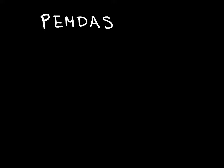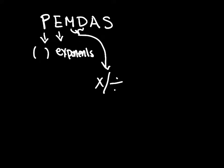And to remember that people often say a phrase like please excuse my dear Aunt Sally. What that stands for, the P stands for parentheses, the E stands for exponents, the M and the D are for multiplication and division, and the A and the S are for addition and subtraction.